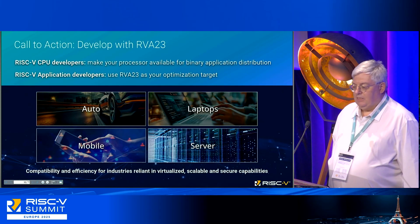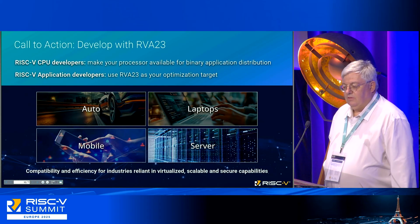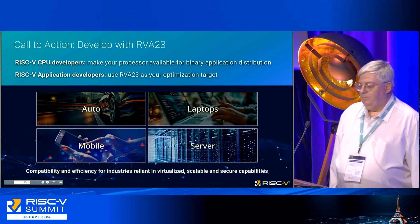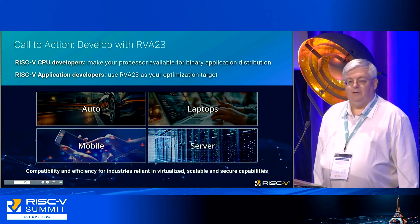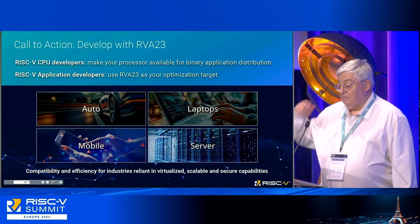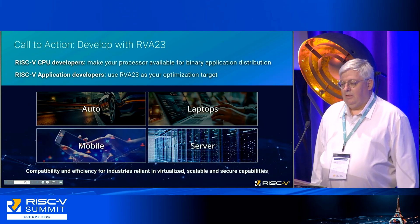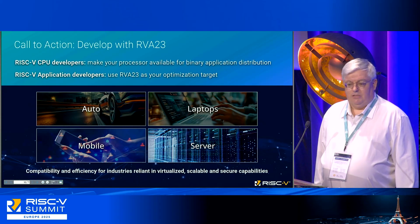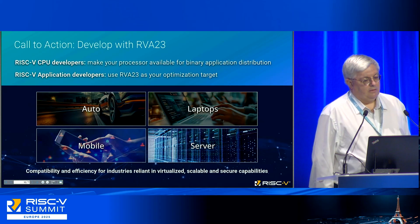The call to action: if you're a developer for a CPU, use RVA23 so that you're a target for binary distribution. And if you're developing applications, use RVA23 as your optimization target.